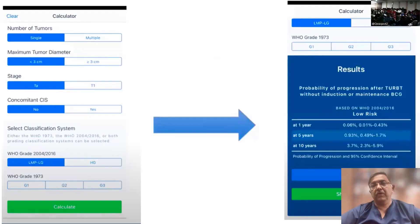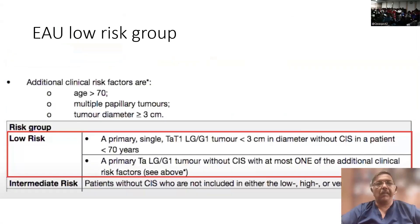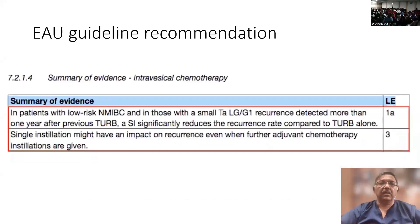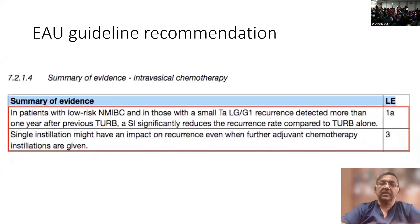Follow-up is at three months, nine months, and then yearly for five years. Low risk patients are those with a primary single TA low-grade cancer less than 3 centimeters without CIS in a patient younger than 70. Intravesical therapy is really only recommended in low risk patients in whom recurrence is detected more than one year after previous TURBT. Generally, low risk patients can be treated by a single intravesical instillation after surgery and nothing else as long as they remain disease free.